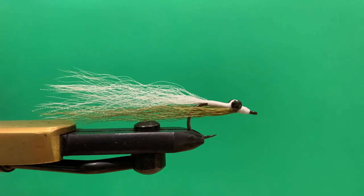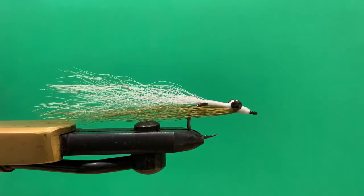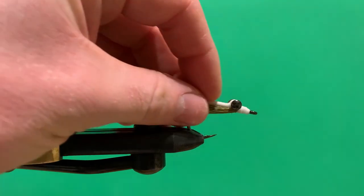For the eyes, you need a set of dumbbell eyes. I'm using 4mm eyes today, but you're just matching your eyes to the size of the hook. Go a little bit larger if you want the fly to sink quicker, and smaller if you want to fish the fly quite shallow.